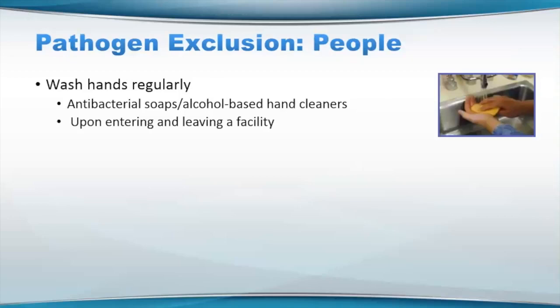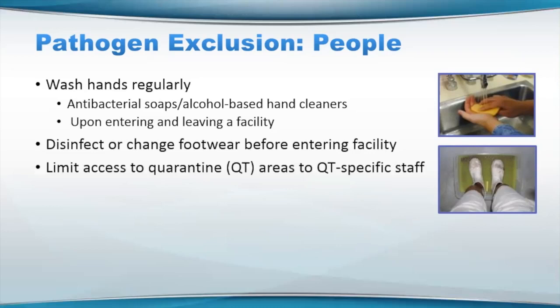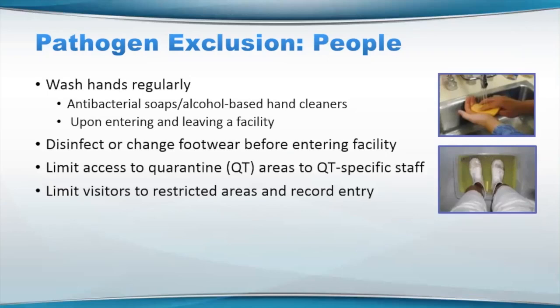So let's talk about people a little bit now. People can definitely carry things around with them. One of the most obvious — many of you are probably aware of it — is on their hands when they're handling animals or the water. So having a way for your staff and visitors to wash their hands, whether it's potentially using antibacterial soaps or alcohol-based hand cleaners, both entering and leaving the facility as well as going from one system to another. Disinfect or change footwear before entering the facility. And you don't want to place nets or other things on the ground if possible, unless you really have a good protocol for making sure your floors are always disinfected.